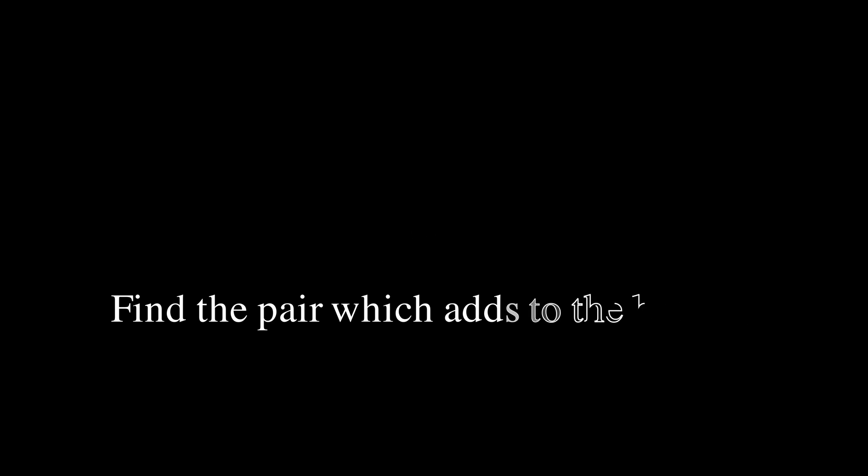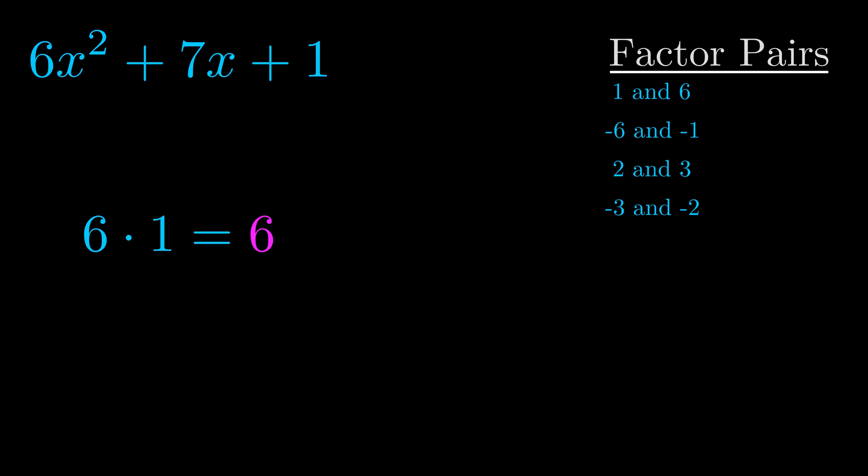The b value is the coefficient on the x term. That's the middle term, the one that we haven't done anything with yet. And really this is the only factor pair that we need.